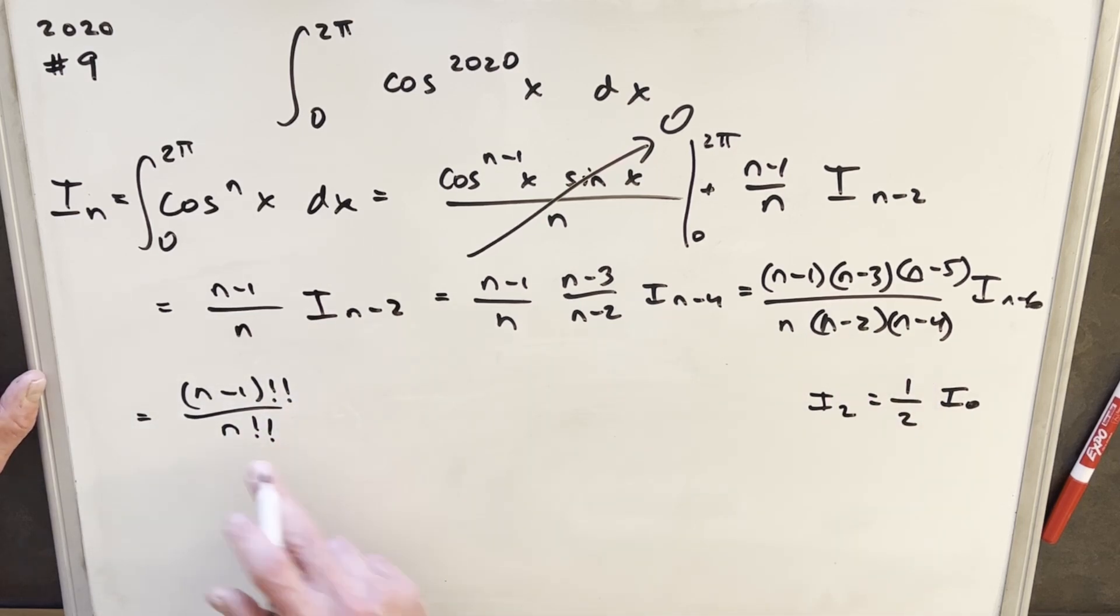In an even double factorial, the last term is going to be 2. And then we're going to, for just our, at the very end, we're going to have this i sub 0.